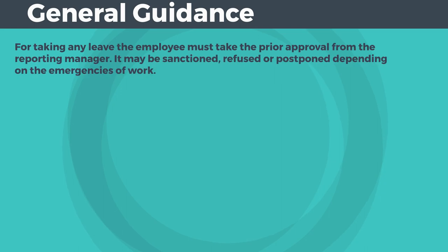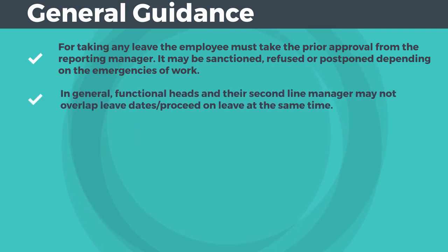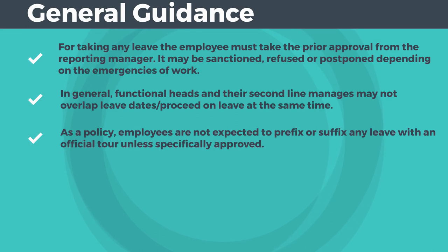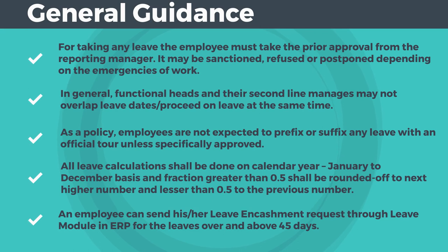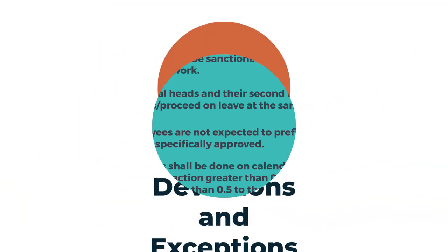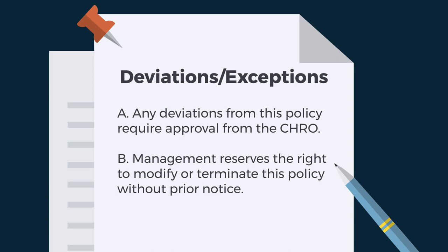For taking any leave, the employee must obtain prior approval from the reporting manager; it may be sanctioned, refused, or postponed depending on work exigencies. In general, functional heads and their second-line managers may not overlap leave dates or proceed on leave at the same time. As a policy, employees are not expected to prefix or suffix any leave with an official tour unless specifically approved. All leave calculations shall be done on a calendar year January to December basis, with fractions greater than 0.5 rounded up and lesser than 0.5 rounded down. An employee can submit a leave encashment request through the leave module in ERP for leaves above 45 days. Any deviations from this policy require approval from the CHRO, and management reserves the right to modify or terminate this policy without prior notice.